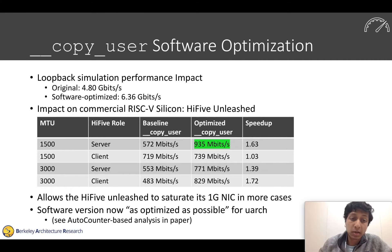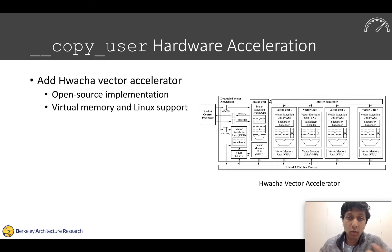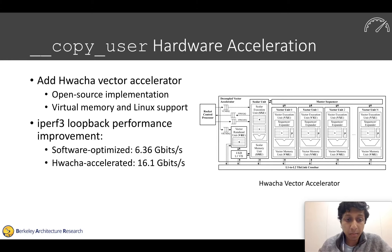The software-optimized version of copy_user is essentially as optimized as possible, shown with AutoCounter-based performance analysis in the paper. Given that our software is as optimized as possible, and we want to continue to get performance improvement, we're going to hardware-accelerate copy_user by adding the Hwacha vector accelerator to our design. This is an open-source vector coprocessor with virtual memory and Linux support. We modify the Linux kernel's copy_user implementation to call out to Hwacha to do these memory copies. Once we do this, our loopback performance improves to 16 gigabits per second.